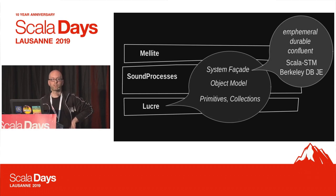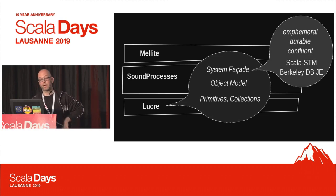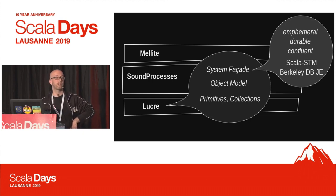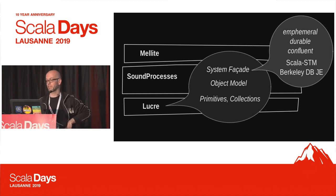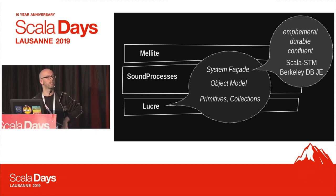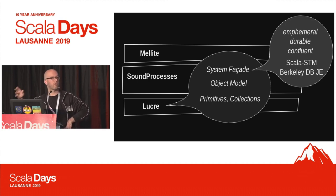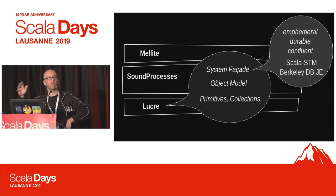The last type is the confluent one, which on top of the durable layer also keeps track of all the history of modifications of objects. So you can basically go back at any point in the history of a piece.